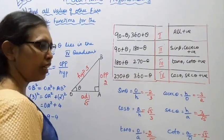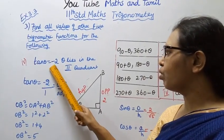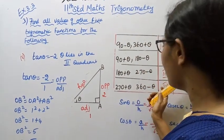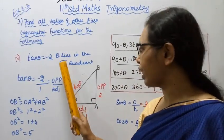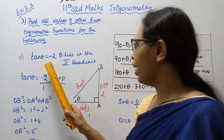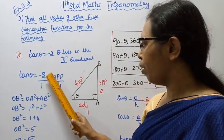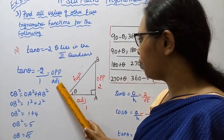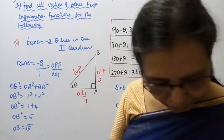Fourth sub-division: tan theta equals minus 2, theta lies in the second quadrant. In the second quadrant, sin and cosecant are positive; cos and tan are negative. Tan theta equals opposite by adjacent, so opposite equals 2 and adjacent equals 1.